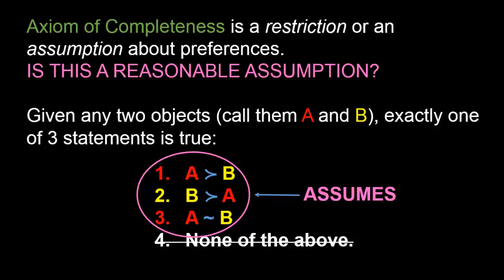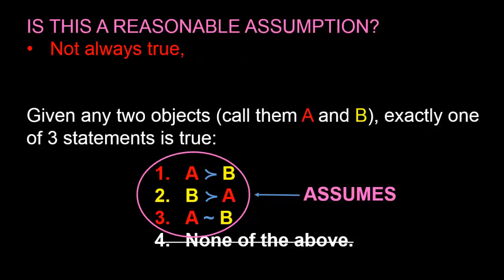Is this a reasonable assumption to make? On the one hand, it's not always true. For example, it might be that Jane has never tasted an apple or a banana in her life, and so she genuinely has no opinion whatsoever about them. But for the most part, these situations are kind of unusual. Whenever you give people two objects, they'll usually be able to tell you whether they strictly prefer one to the other or are indifferent between them. And hence, even though this axiom does not perfectly describe the world, it is nonetheless a reasonably good description.